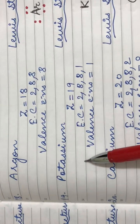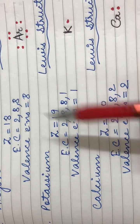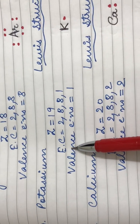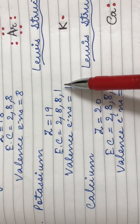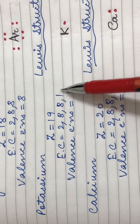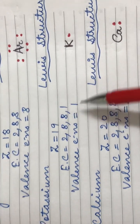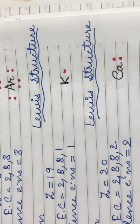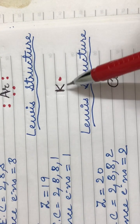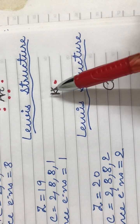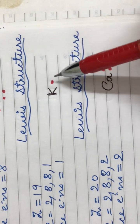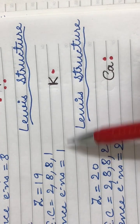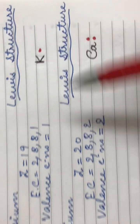Coming to the next element, potassium. It has an atomic number of nineteen. Its electronic configuration is 2,8,8,1 and it has one valence electron in the outer shell. Therefore, the Lewis structure for potassium is the symbol K with one dot for its one valence electron.